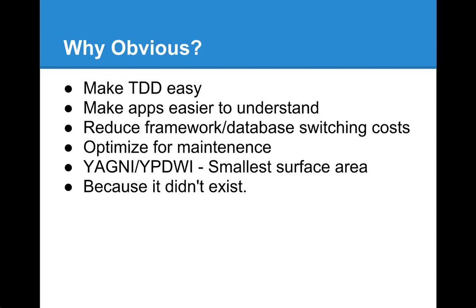Apps tend to live longer than we ever think they would. And maintenance is where most of the effort is going to be spent in development, whether it's adding new features or fixing bugs. You don't often get to do a lot of greenfield development on an existing application. So making it easy to maintain is probably more beneficial than making it just really fast to get going. And throughout Obvious is the idea of YAGNI — you ain't going to need it — the idea of having the smallest surface area, only building the minimum amount of things required to have your application work.